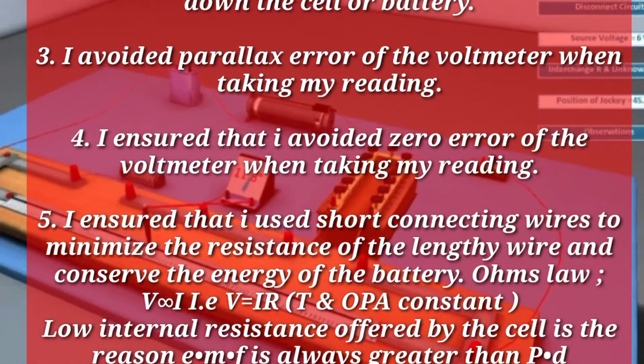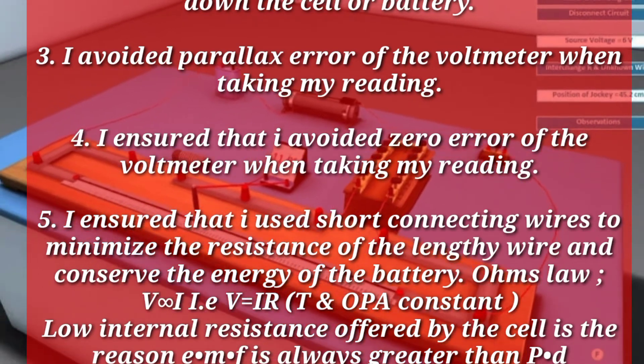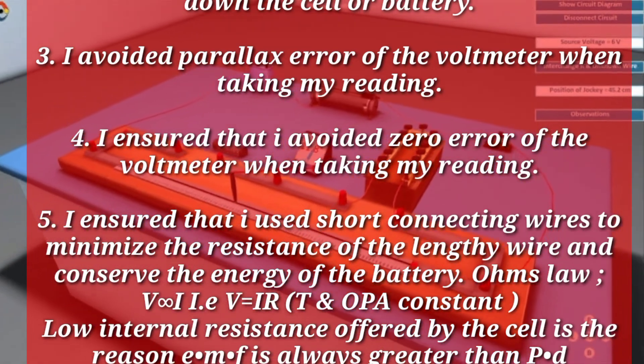Precaution 6: Low internal resistance offered by the cell is the reason EMF is always greater than potential difference.